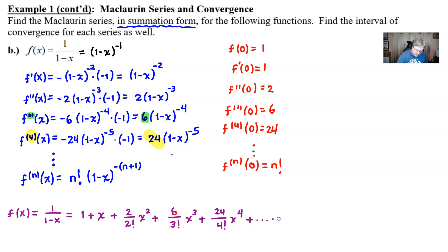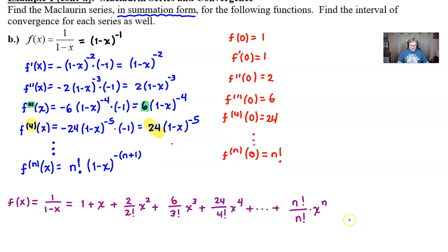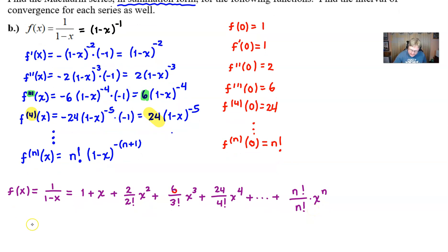And then by the time we get to this all-important nth term, we're going to have an n! divided by, interestingly enough, n!, multiplied by x^n. So very interesting. What we've got here, and if you've probably followed along, all of these coefficients are going to reduce to 1. And so we just have 1 + x + x^2 + x^3 + x^4 + all the way up to x^n.